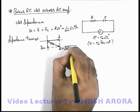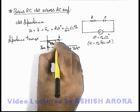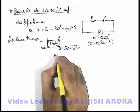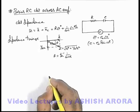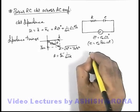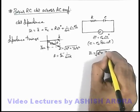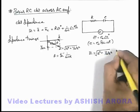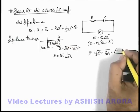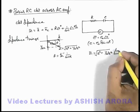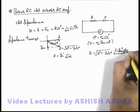The resulting magnitude of Z is the square root of R-squared plus 1 by omega-squared C-squared, at an angle theta where theta equals tan-inverse of 1 by omega-C-R. The angle is taken as negative because the capacitive reactance is in the negative or clockwise direction, so Z equals root of R-squared plus 1 by omega-squared C-squared, at angle negative tan-inverse of 1 by omega-C-R.